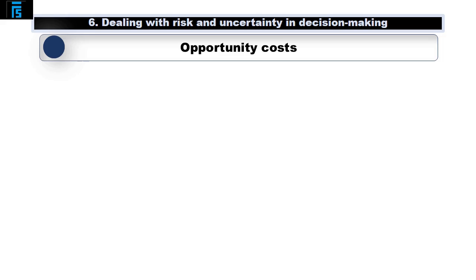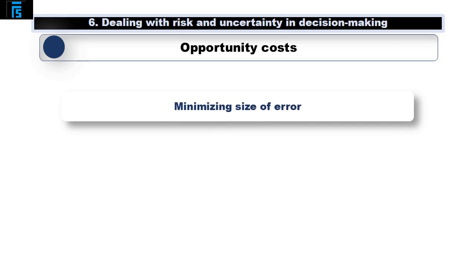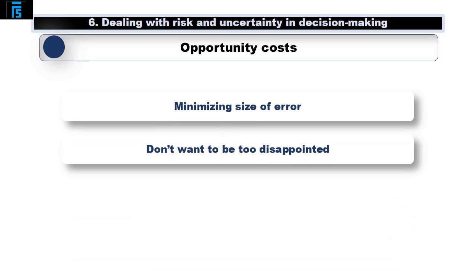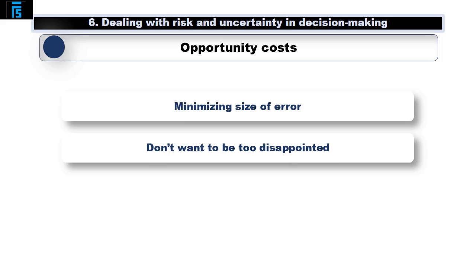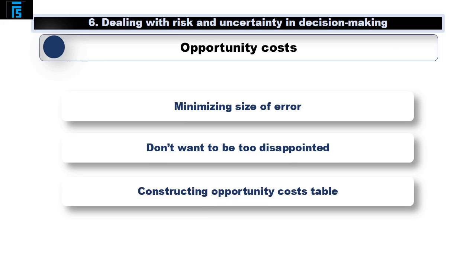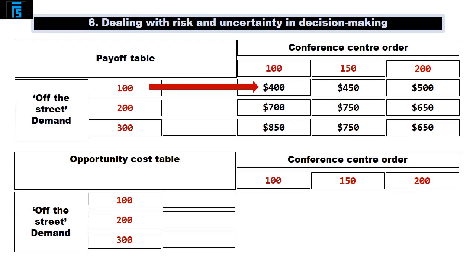A slightly different approach to risk aversion is to focus on opportunity costs. A risk averse individual may seek to choose the option that minimises the size of the error they made in hindsight — in other words, they don't want to be too disappointed when they look back that they could have made a better choice. This involves constructing a table of opportunity costs, which again uses the payoff table as a starting point. The opportunity cost table has the same structure and headings as the payoff table, and is completed crossways but read downwards.